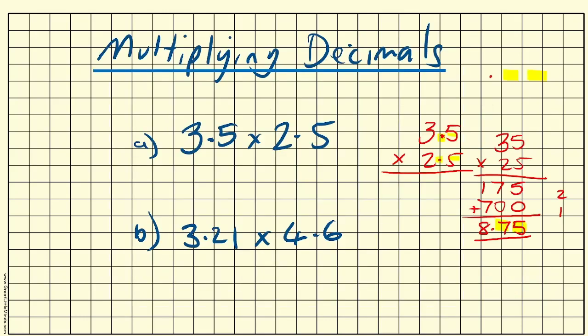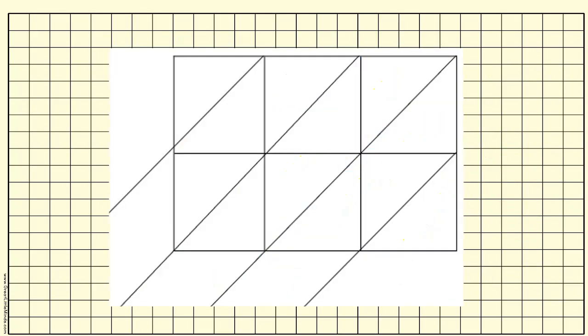Let's look at the next one, 3.21 times 4.6. So let's write it in: 3.21, 4.6. And remember again, we're just going to multiply it out. 4 times 1 is 4, 0 tens is 4 units. 4 times 2 is 8, 0 tens is 8 units. And 4 times 3 is 12, 1 ten, 2 units.